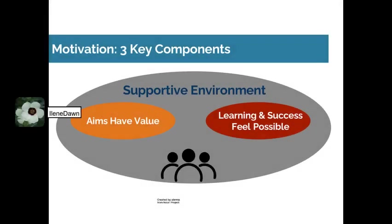Motivation has three components, just like it has three kinds of agency represented by the image: the teacher, the learner, and the knowledge they create together. In order to be motivated to do those things — teach, learn, create — there are these three components.